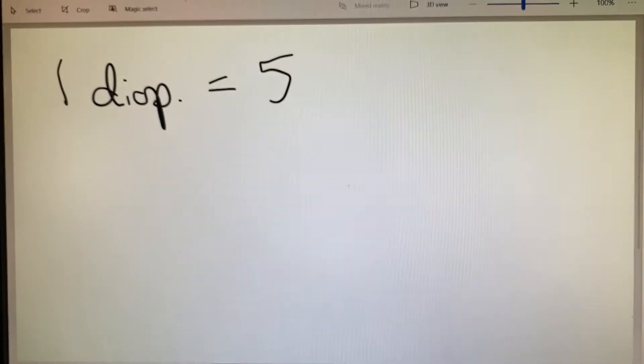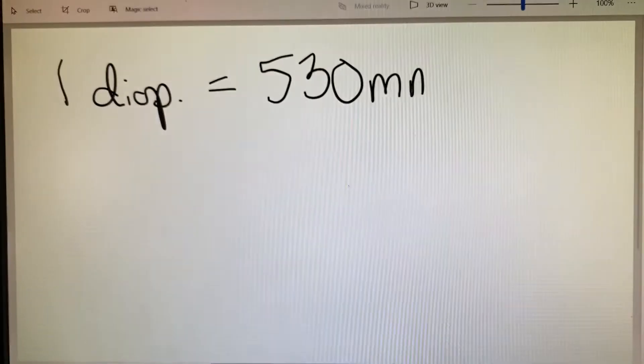Good morning, welcome to week three of ABO class. We've got several pieces to discuss, but we're going to start with radius of curvature. The rule of thumb says that a one diopter lens has the radius of curvature of 530 millimeters.